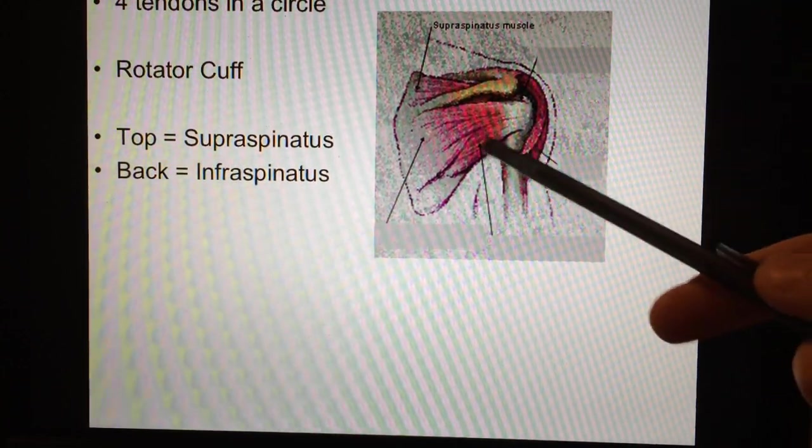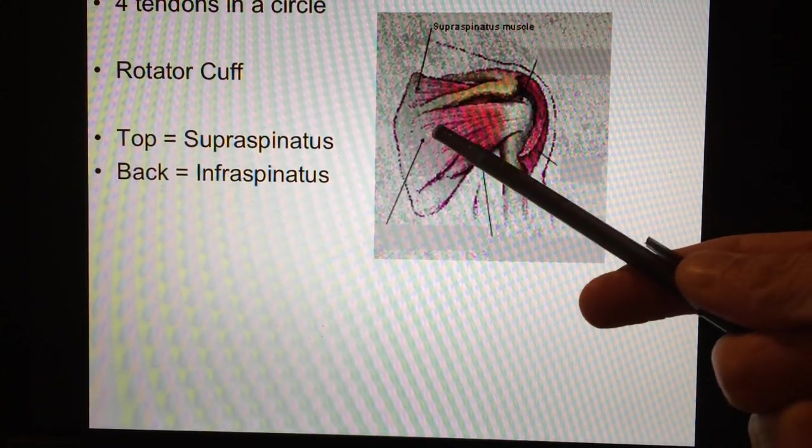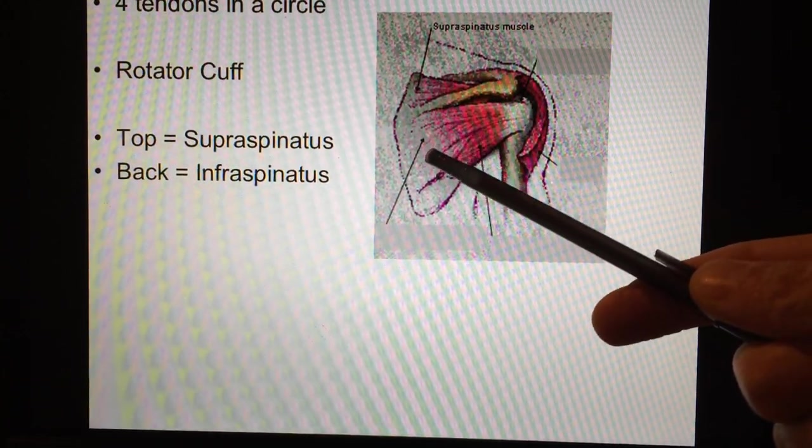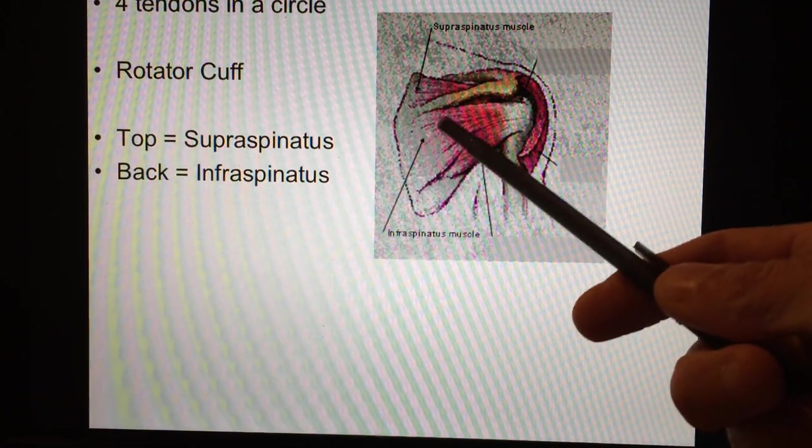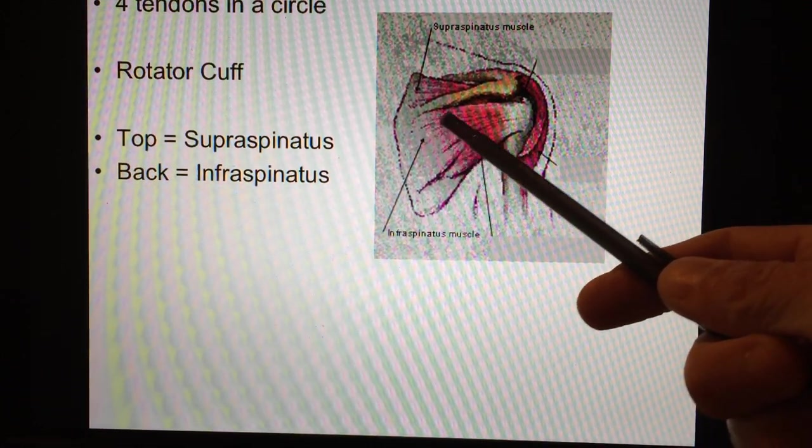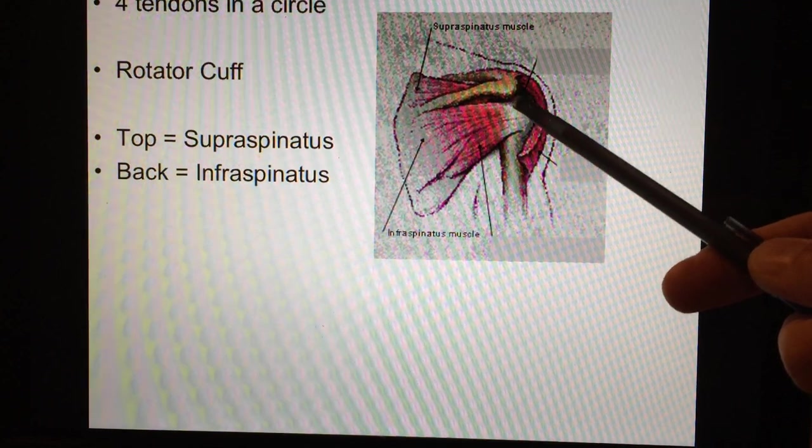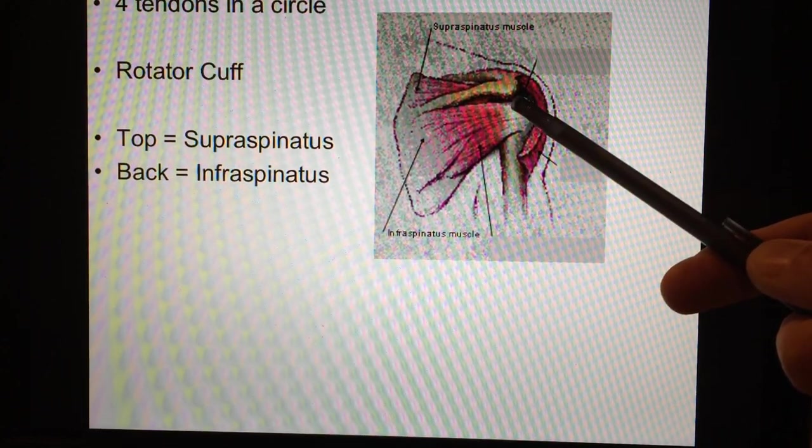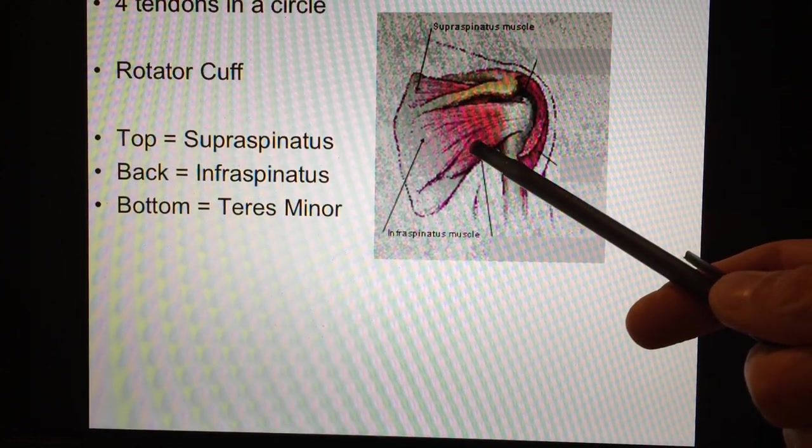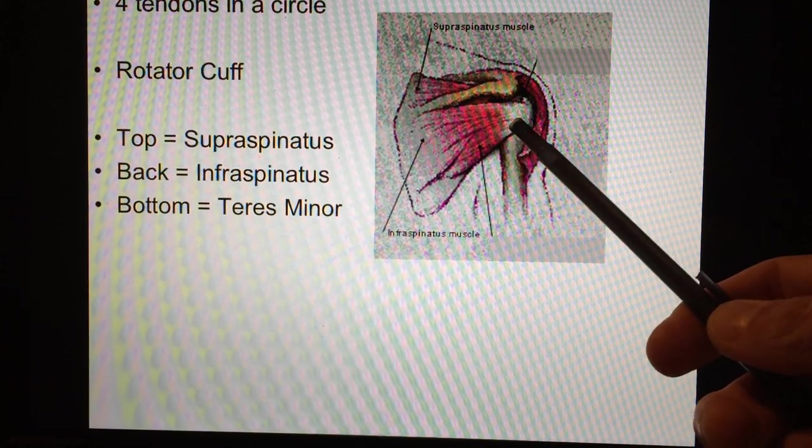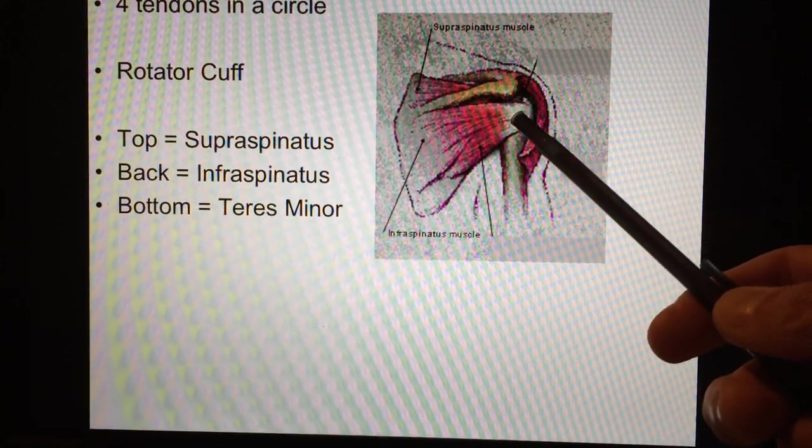Let's look at it in the back. I said this wrong before. I apologize. The back one right here is called infraspinatus, and that means under the spine. You can see its tendon comes out, and it's right on the back of the head of the humerus. The next one is called teres minor, and its tendon is on the bottom. So I've got top, back, bottom.